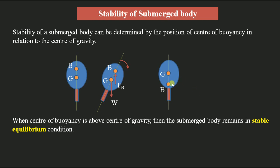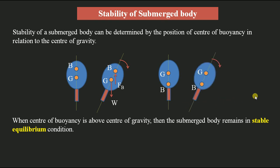Now taking the same balloon but with the center of buoyancy lying below the center of gravity. In this condition the body will be in unstable equilibrium. We again tilt the balloon through an angular displacement and analyze the couple formed by the two forces — the weight of the balloon and the force of buoyancy. The weight acts downward and the force of buoyancy acts upward, forming a couple that causes the balloon to rotate in the clockwise direction.